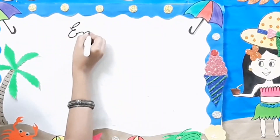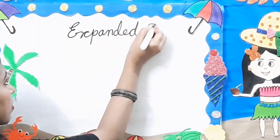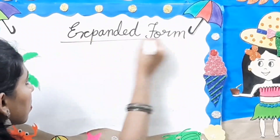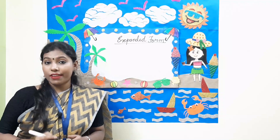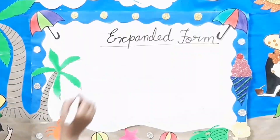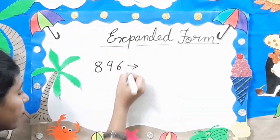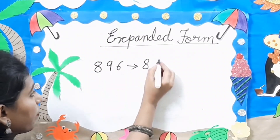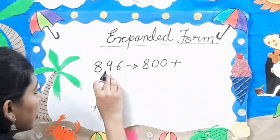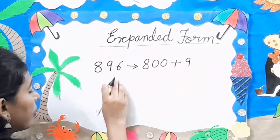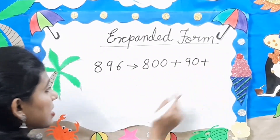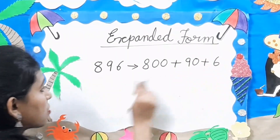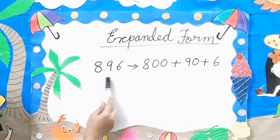We will go to our last topic, that is Expanded Form. In expanded form, we write the number by showing the value of each digit. For example, we have to write the expanded form of 896. First, we will write down the value of 8, and we will put double zero — that is 800. Plus the next number is 9, we will put 10 — that is 90. Plus the last number is 6. So 896 in expanded form is 800 plus 90 plus 6.